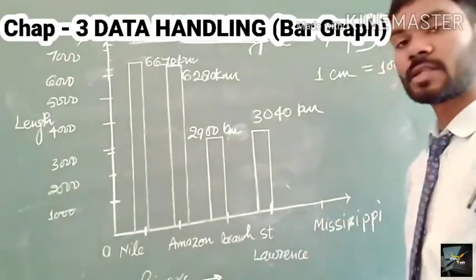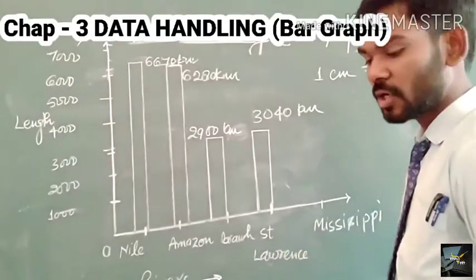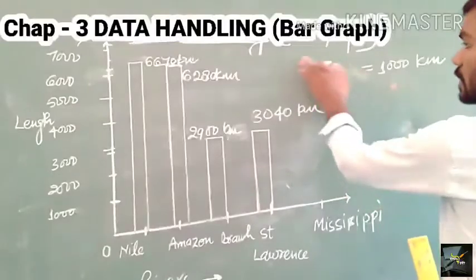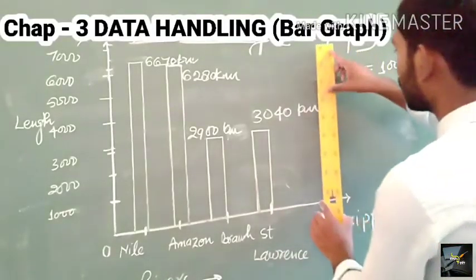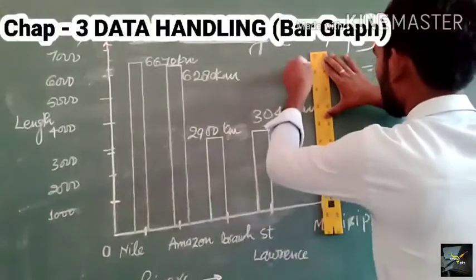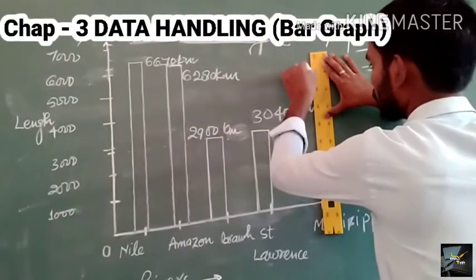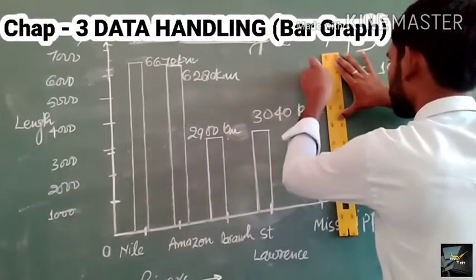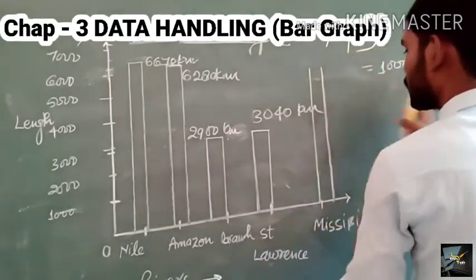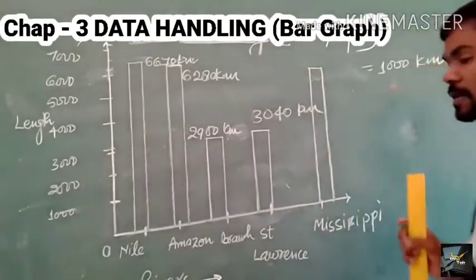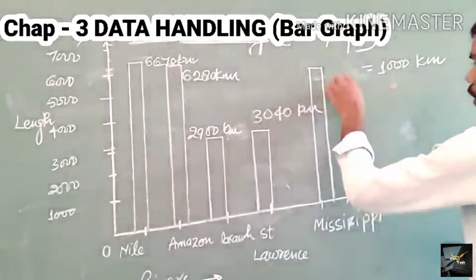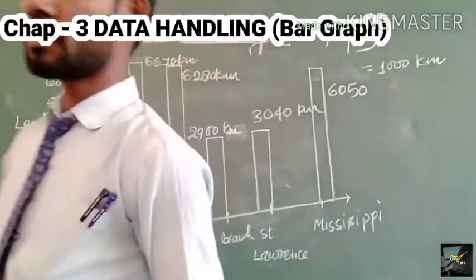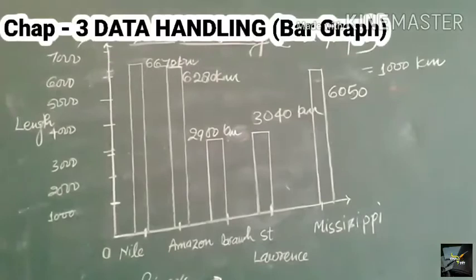And finally, Mississippi Missouri. The Mississippi Missouri river has a length of 6050 kilometers. So 6050 may be at this point on the y-axis. We draw the bar up to that point. This bar represents 6050 kilometers.